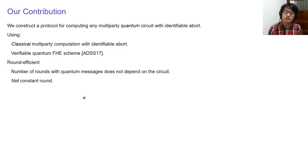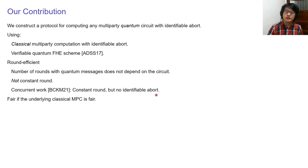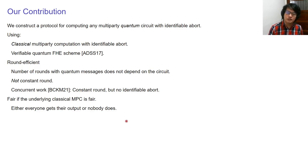We do not have constant rounds, as opposed to the concurrent work by Bartusek, Coladangelo, Khurana, and Ma, which is also presenting at this conference and achieves constant-round multiparty quantum computation, but without identifiable abort. It is also worth mentioning that our protocol is fair if the underlying classical MPC is also fair — meaning either everyone gets their output or nobody does, as opposed to the unfair situation where dishonest parties could get their output first and then abort the protocol so honest parties get nothing.